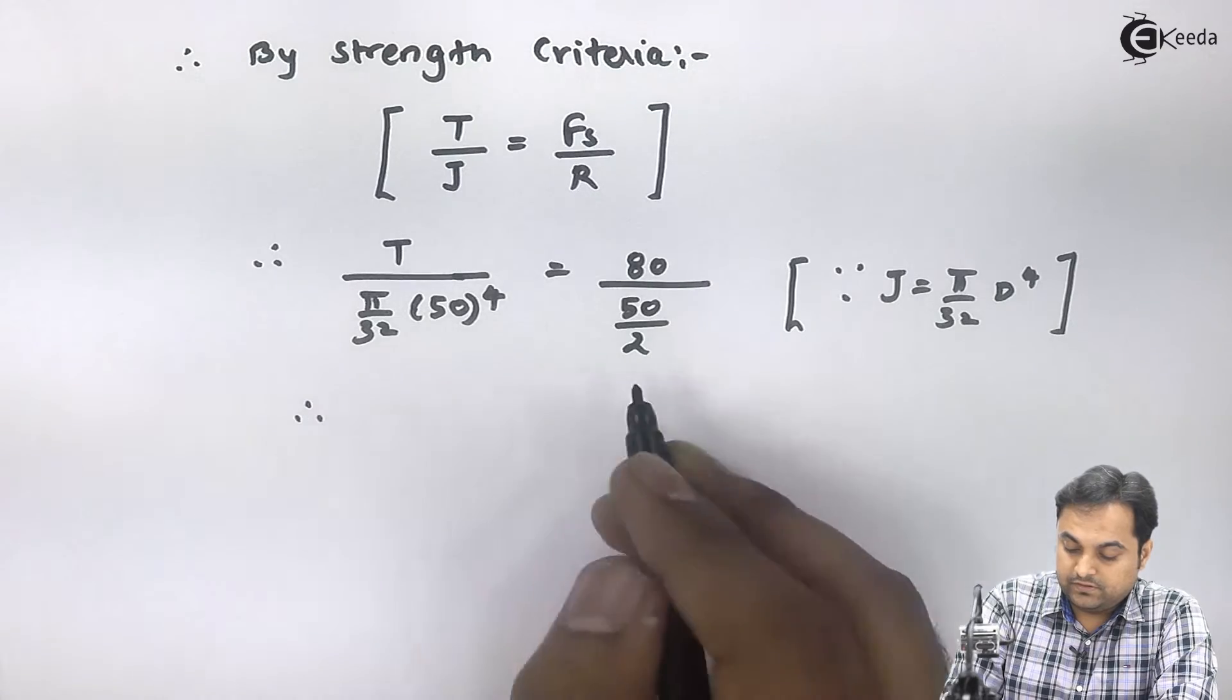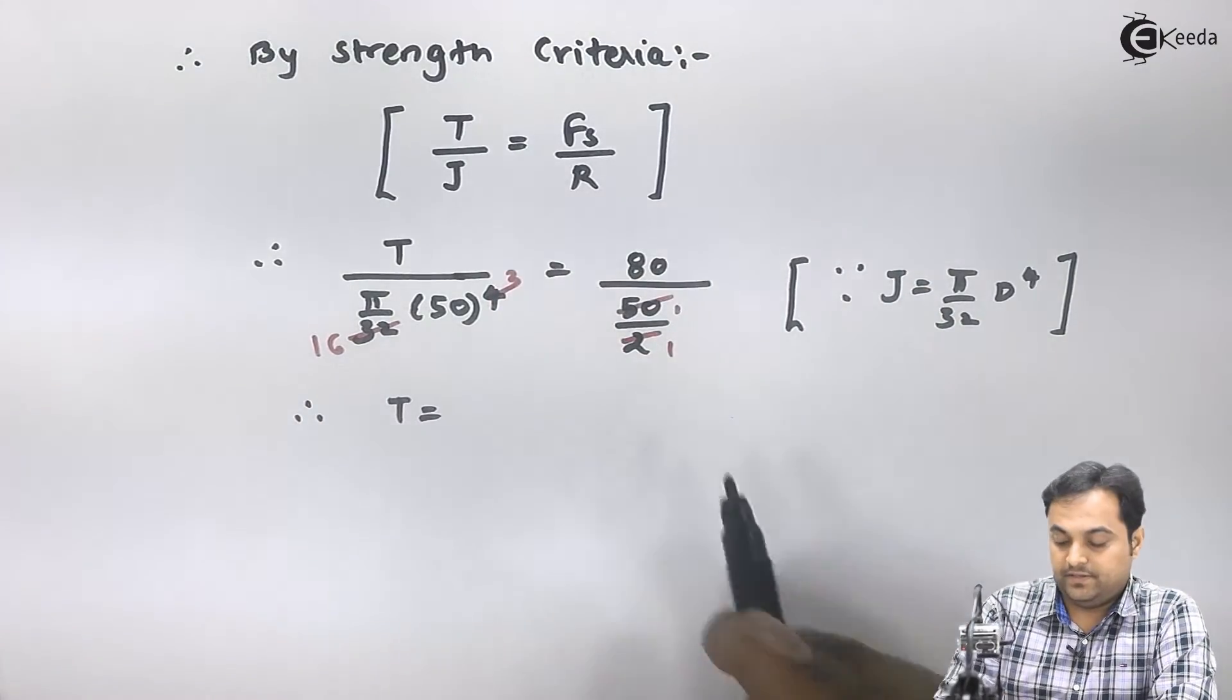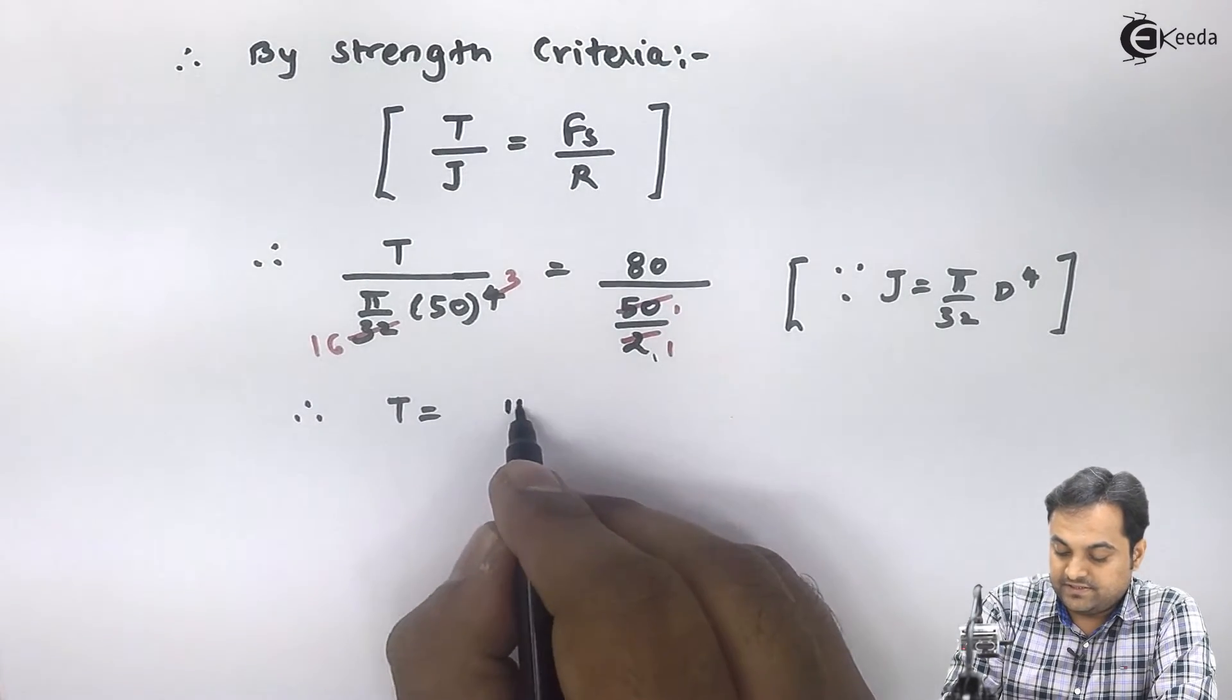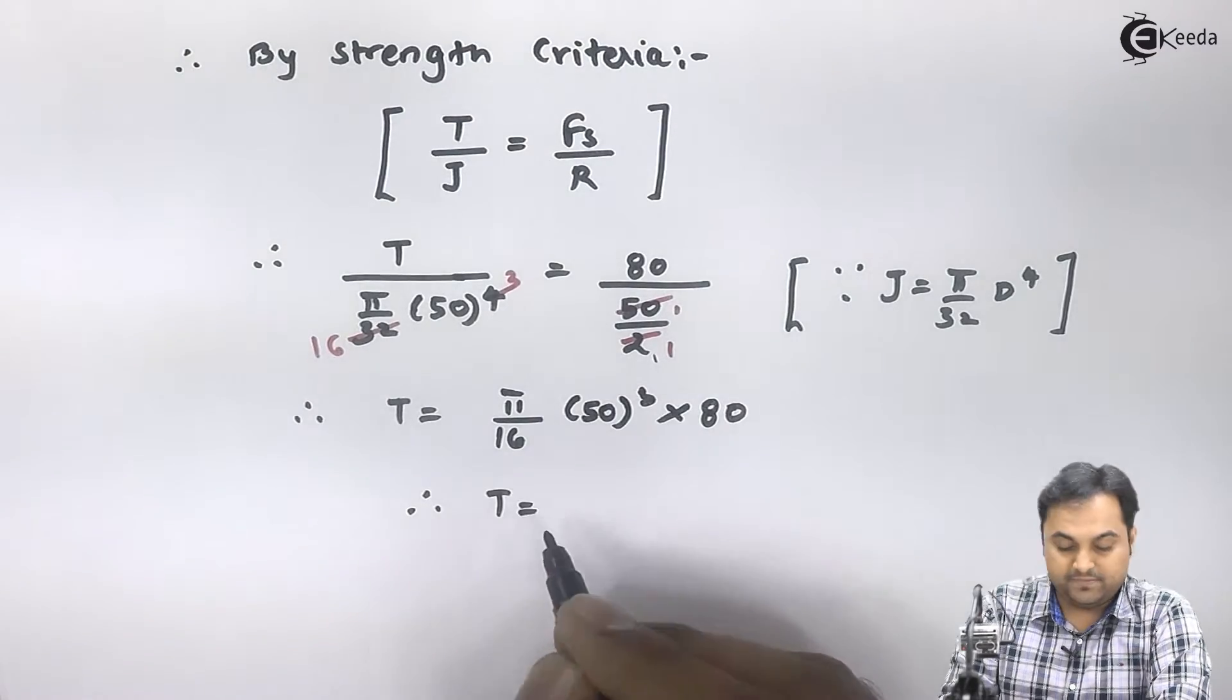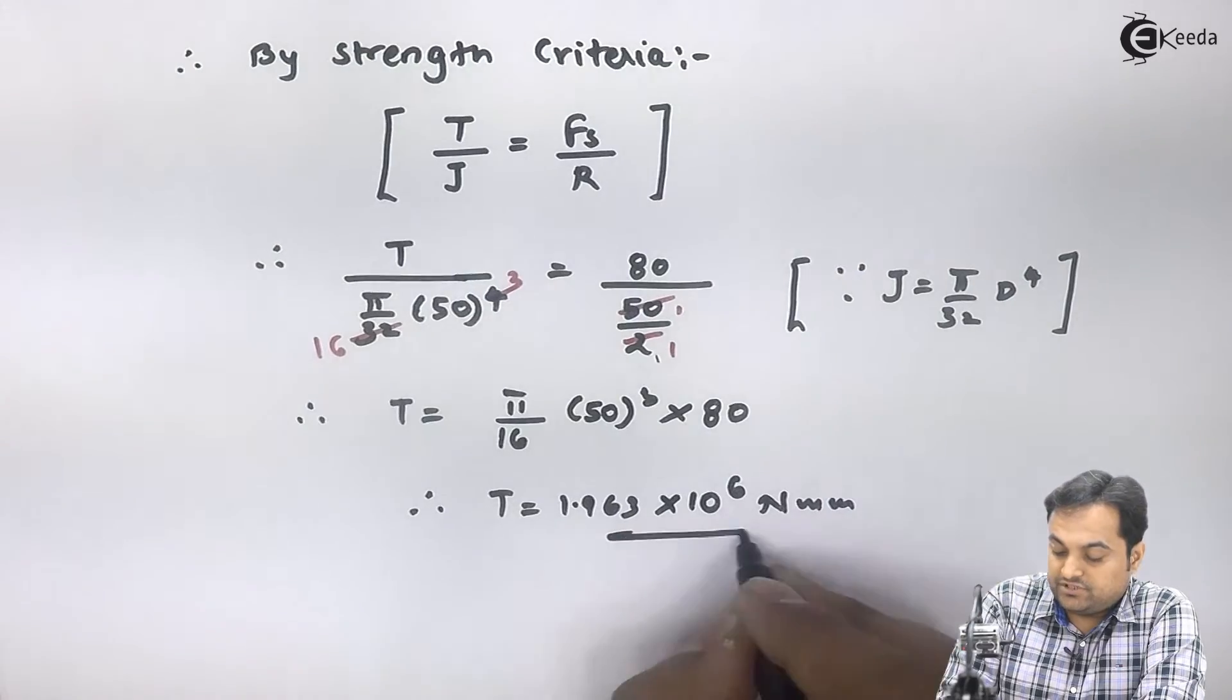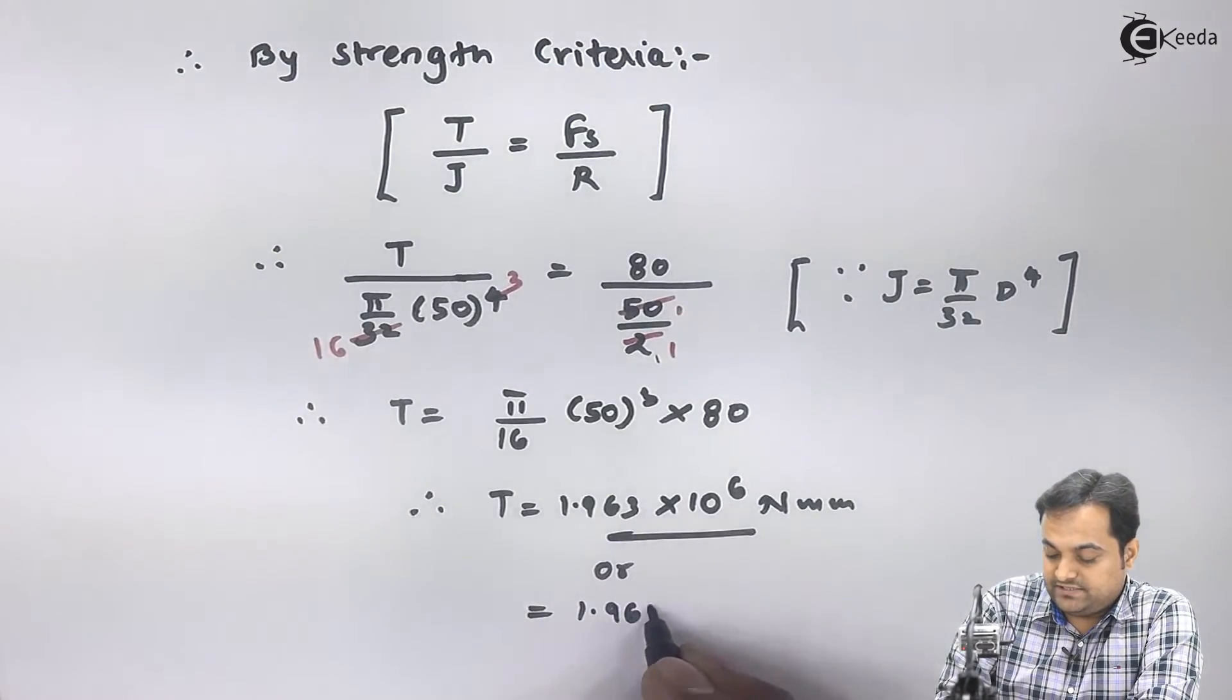Therefore I will get T by canceling terms on left and right hand side. 150 gets cancelled, so cube is left, then 16 remains. After cancellation I get π/16 × 50³ × 80. From this I get torque as 1.963 × 10⁶ Newton millimeter. Since power is in watts, we should keep torque in Newton meter, so dividing by 1000 it becomes 1.963 × 10³ Newton meter.